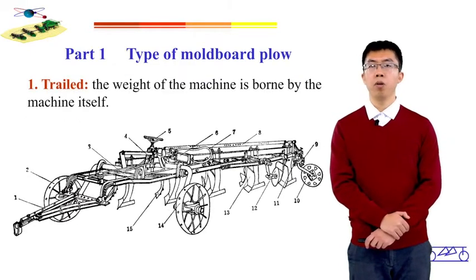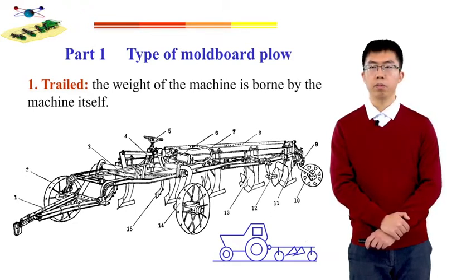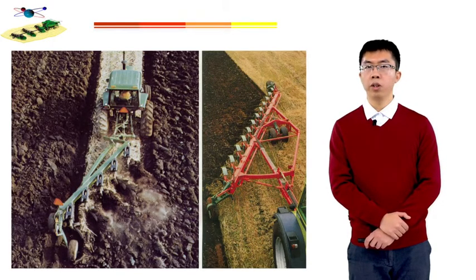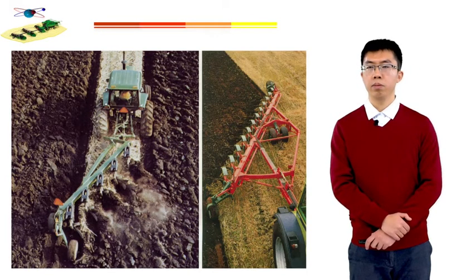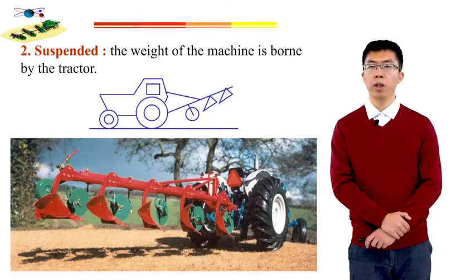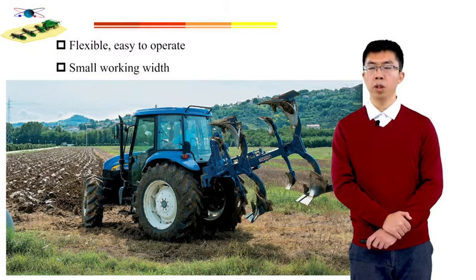The first type of moldboard plow is the trailed one. In this transportation state, the weight of the machine is borne by the machine itself. These pictures show the trailed moldboard plow at work, and we can see that the working width of this type is very large. The second type is the suspended one. In this transportation state, the weight of the implement is borne by the tractor. The suspended plow is flexible and easy to operate, but the disadvantage is that the working width is normally very small.